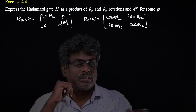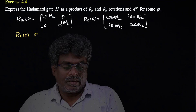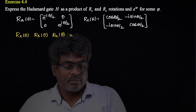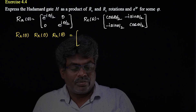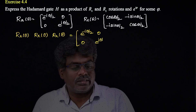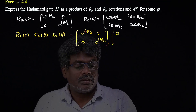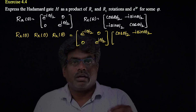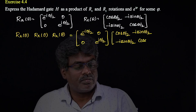Now I am taking the product Rz(θ) · Rx(θ) · Rz(θ). Multiplying the first two matrices, the (1,1) element gives e^(-iθ/2) · e^(-iθ/2) · cos(θ/2) = e^(-iθ) · cos(θ/2).